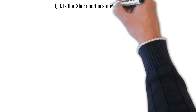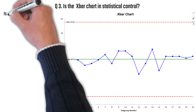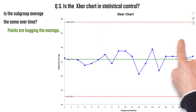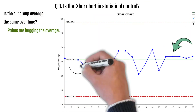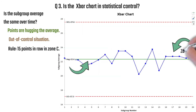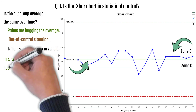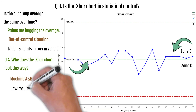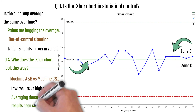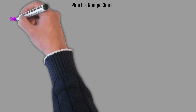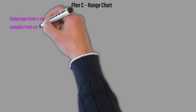Now we go to the X-bar chart for Plan B. Is it in statistical control? It's asking whether the subgroup average is the same over time. It looks like everything's in control, but actually the points are hugging the average — that's an out-of-control situation. It's 15 points in a row in Zone C, which is an out-of-control situation. Why does the X-bar chart look this way? Remember, machines A and B and machines C and D are operating at different averages — low results versus high. When you average those together, you get near the centerline.